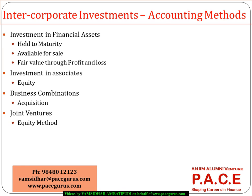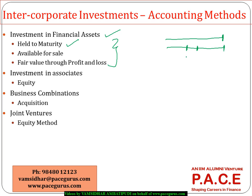Now we will deal with what kinds of methods we use from the financial statements perspective — how do you handle these four kinds of investments? When it comes to financial assets, we classify them as either held to maturity, meaning invested with an intention to hold until the maturity period, or available for sale, meaning I may sell it in the near future and not hold it until maturity, or fair value through profit and loss, which are held purely from the trading perspective.